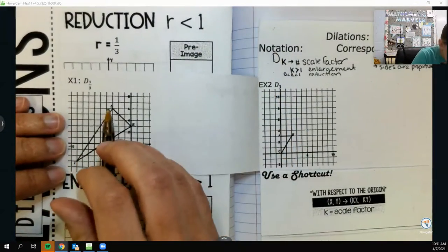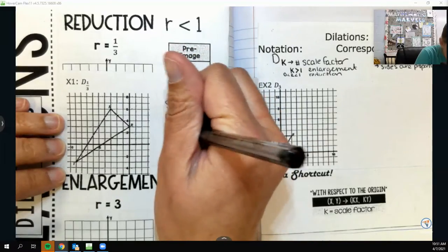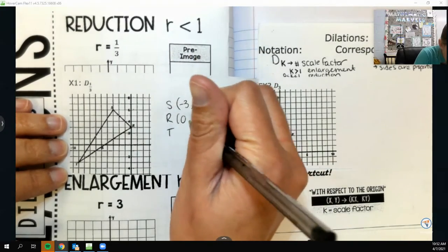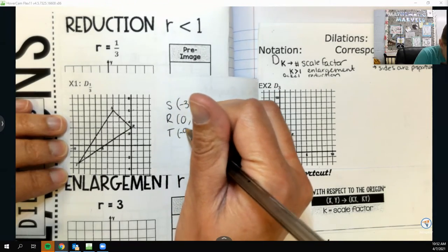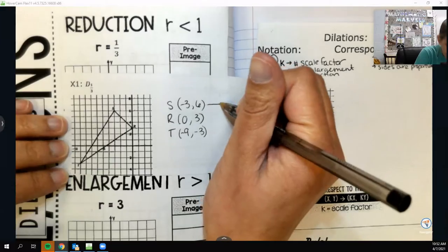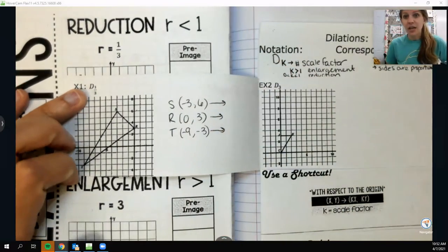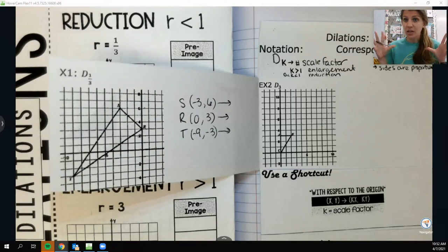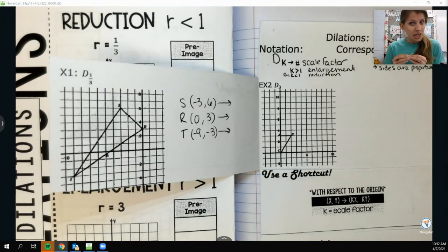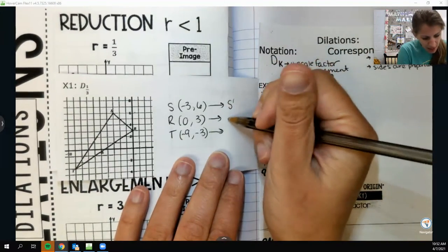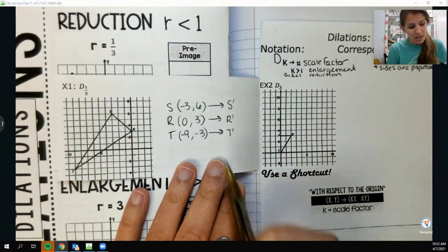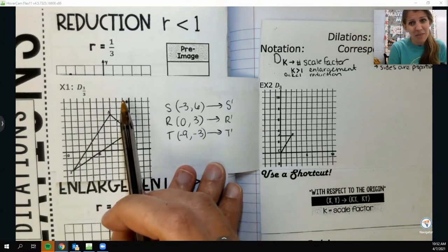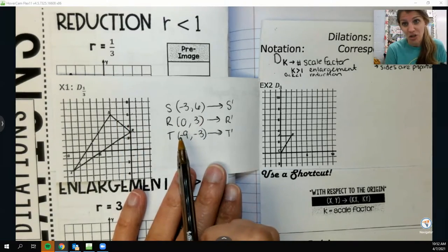Now, much like with the rotations, I actually don't like to really count it out on my graph. I just like to use my shortcut. It's the easiest way to get there. And so when I am dilating with respect to the origin, really, all I do is I take my ordered pair and I multiply it by that scale factor. It's super simple. And hopefully that kind of makes sense because when I did a scale factor before, it was a multiple of that.